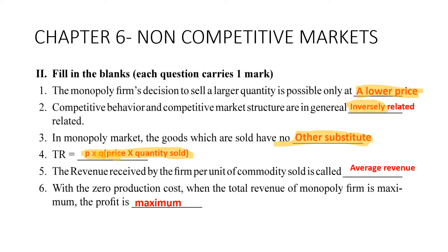Fifth: the revenue received by the firm per unit of a commodity sold is called average revenue — whenever you see 'per unit,' the answer is average. Sixth: with zero production cost, when the total revenue of the monopoly firm is maximum, the profit is also maximum.